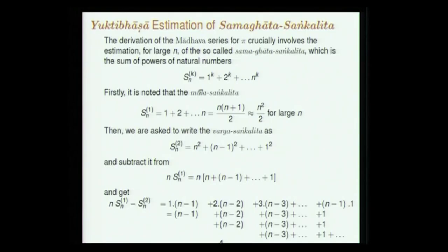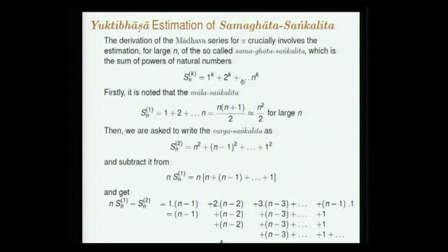Let us look at how Yuktibhasa tries to estimate the Samaghata Sankalita. Sankalita is the sum, Ghata is a product, and Samaghata Sankalita means sum of equal powers — the sum of natural integers raised to the same power. We have to find out how this sum behaves for large n; we need an asymptotic estimate, and this is at the heart of the development of calculus. Estimating this was a major effort in 17th century Europe, which ultimately arrived at the development of calculus. Yuktibhasa has both a statement of the result and a proof.